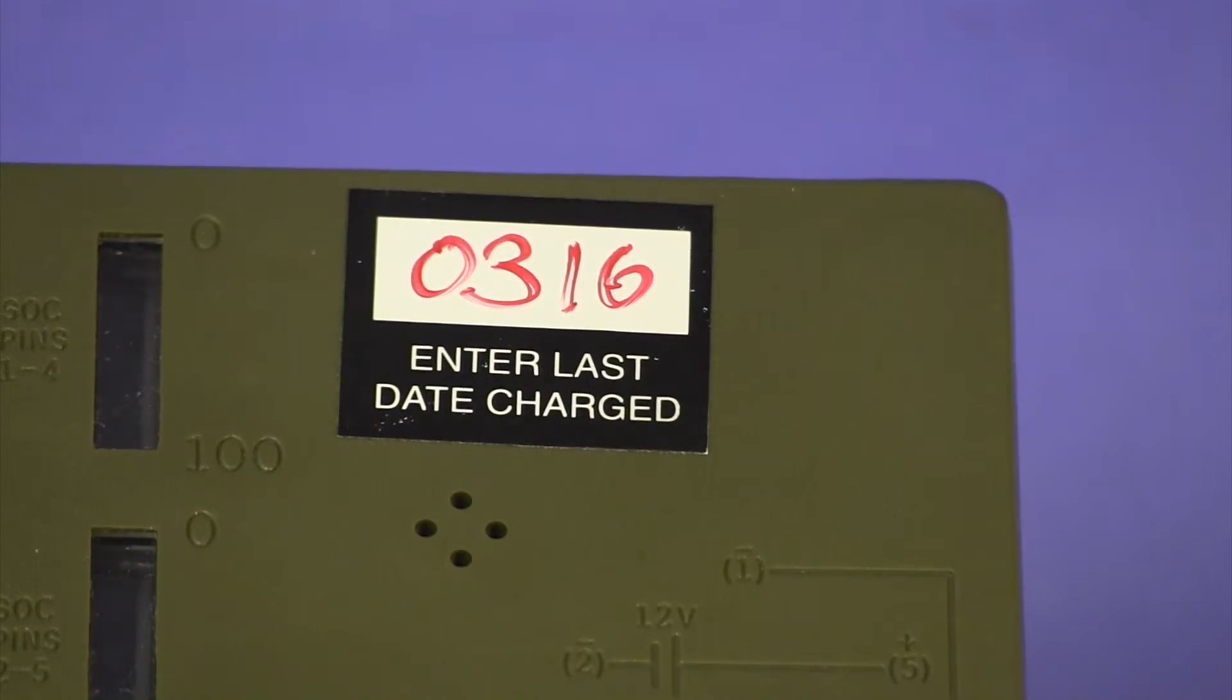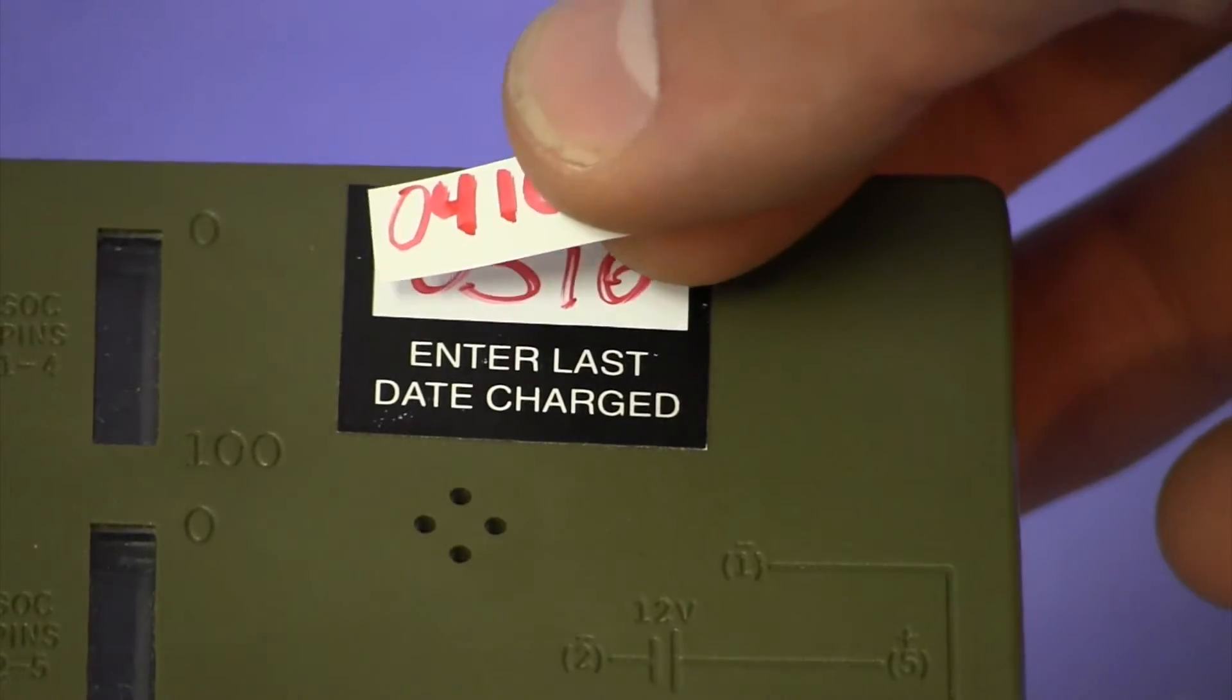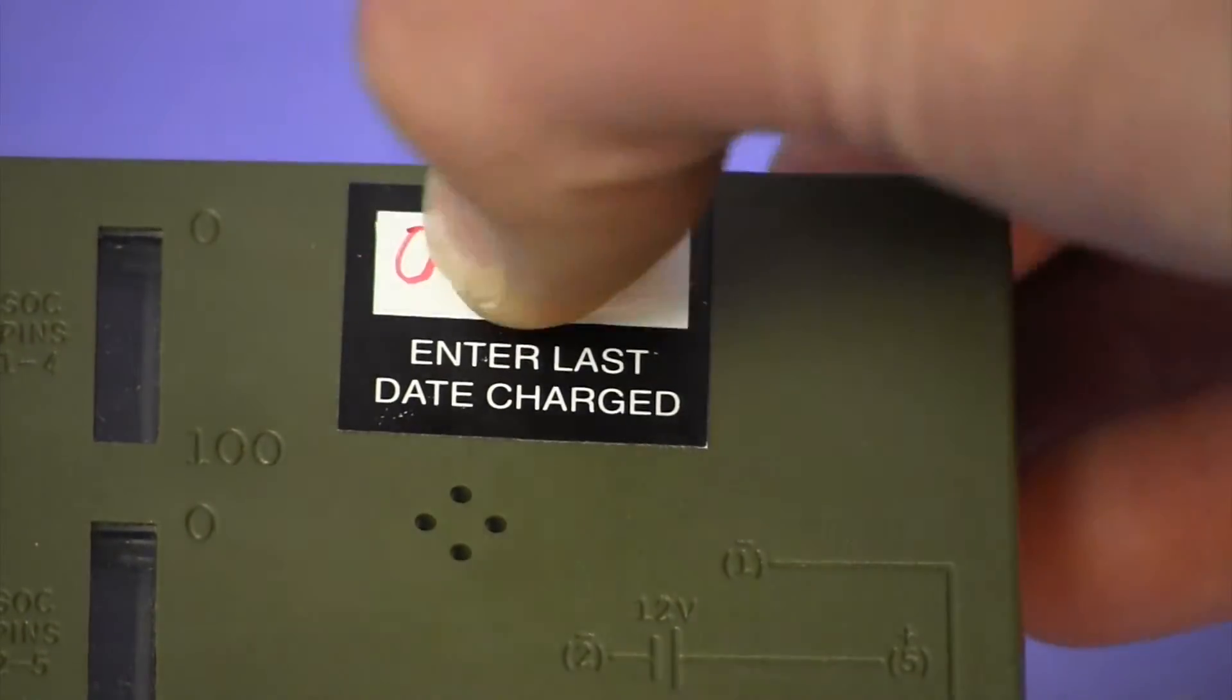Then, remove the previously recorded date and record today's date on the last date charge label.